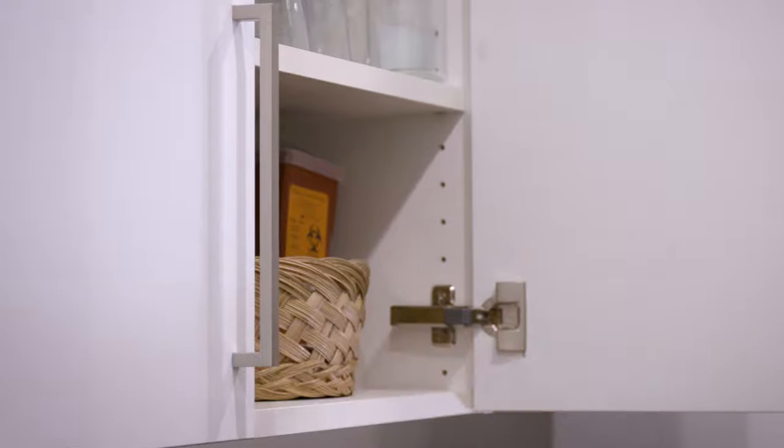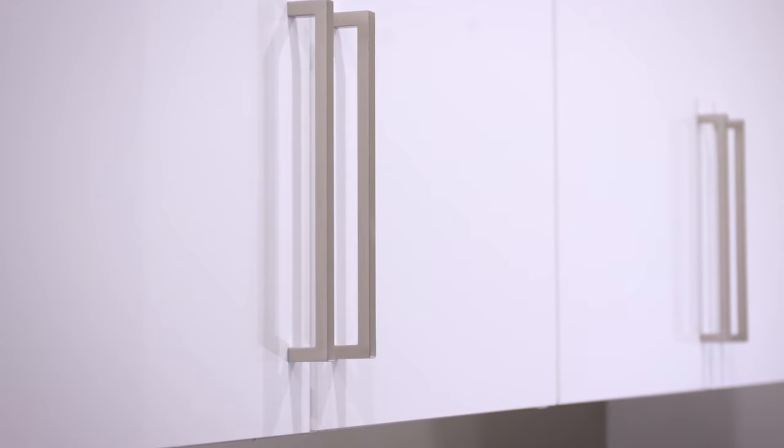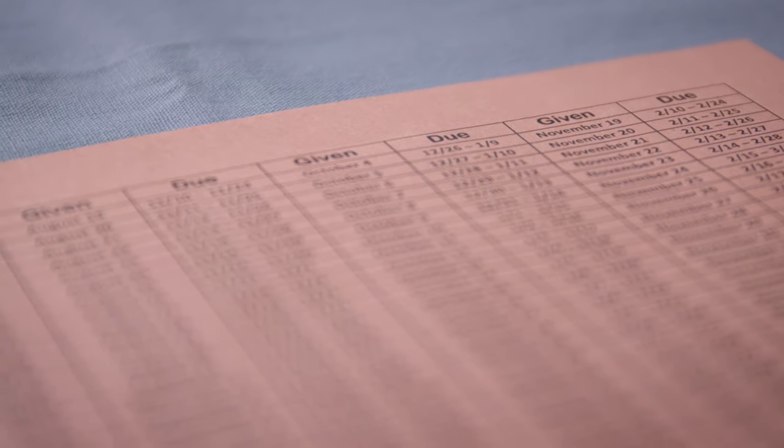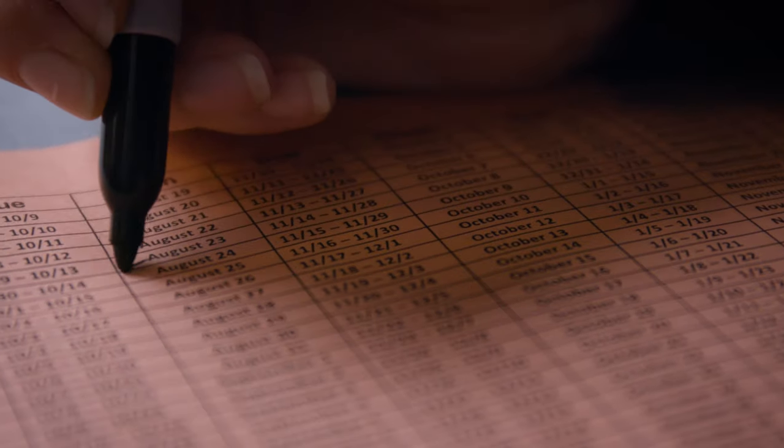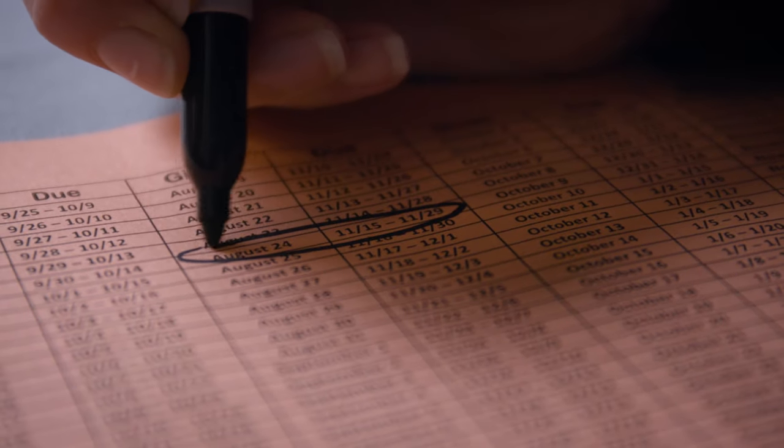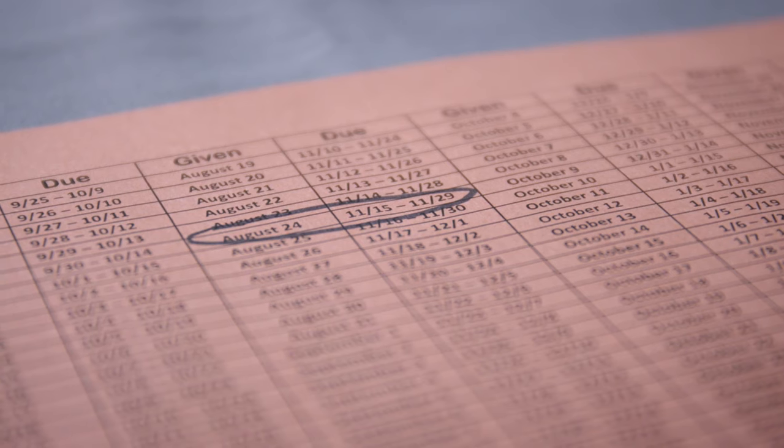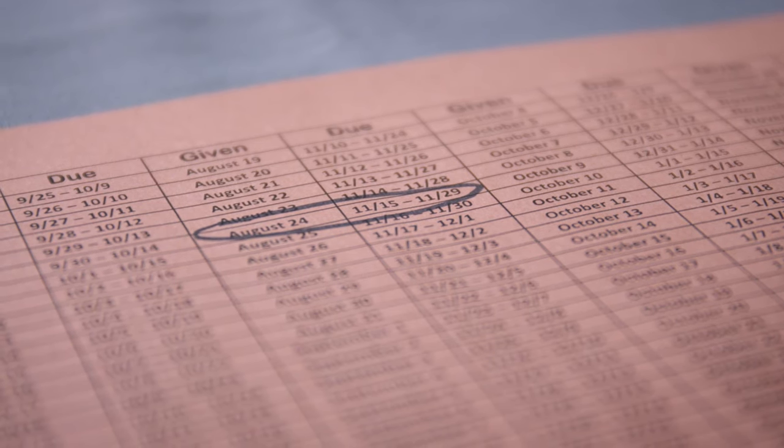The last step is to mark your calendar for when your next Depo Sub-Q is due. Using the chart given to you by the clinic, note the date that you have given yourself your injection. The date that your next injection is due will be to the right of that date.